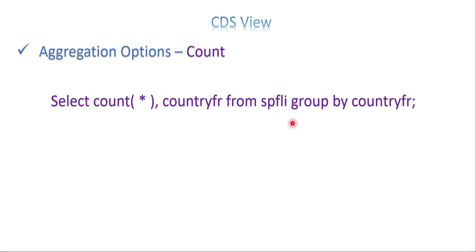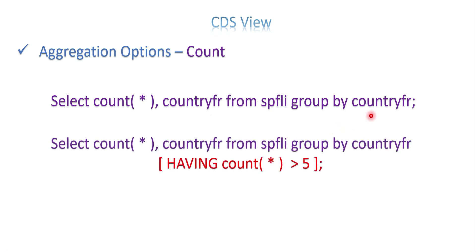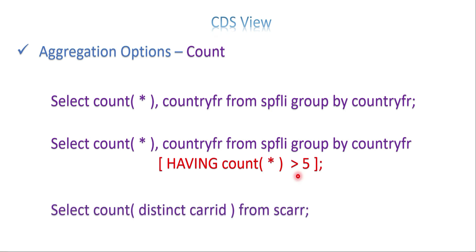For COUNT, it's also straightforward. Use SELECT COUNT(*) to get the number of records, optionally with additional fields and a GROUP BY clause. You can also use HAVING COUNT(*) > 5 depending on your need. For unique values, use COUNT(DISTINCT field_name) - for example, COUNT(DISTINCT carrid) from a table - to get the count of unique values in that field.